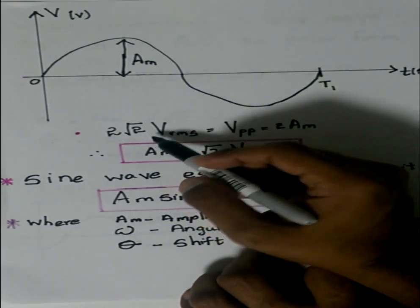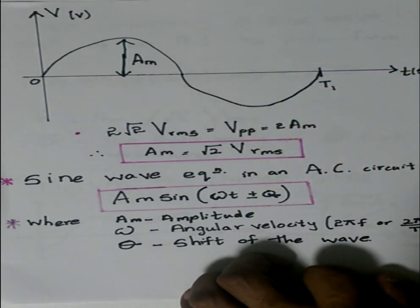Two root two times the voltage, the root mean squared voltage, is equal to the peak to peak voltage, which is two times the amplitude. That's like this distance plus this distance.